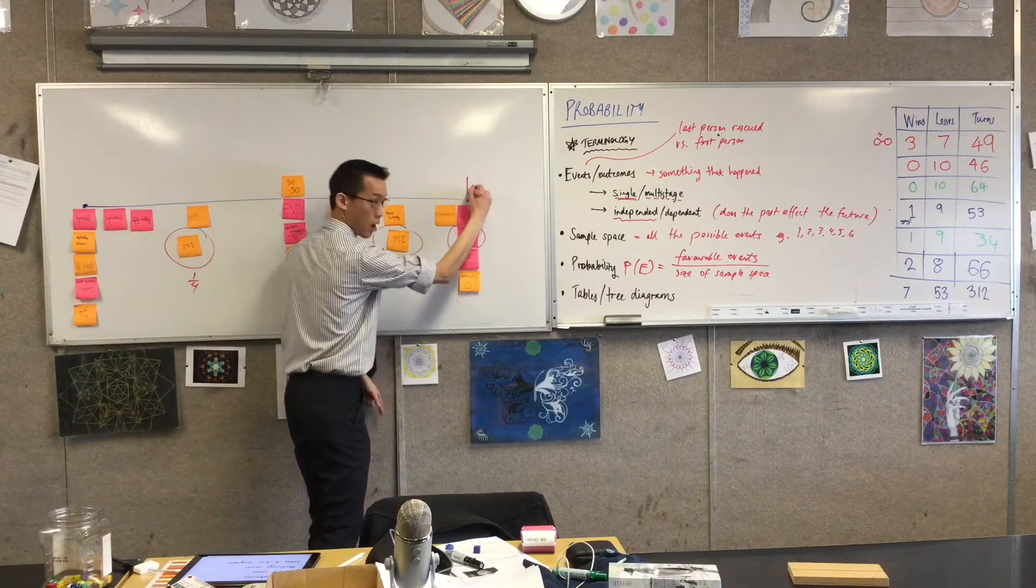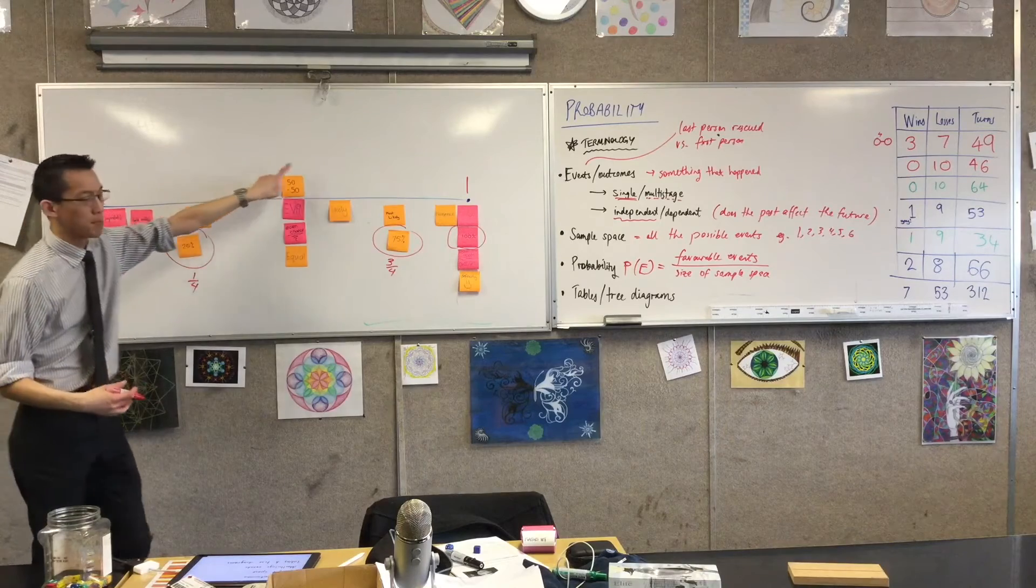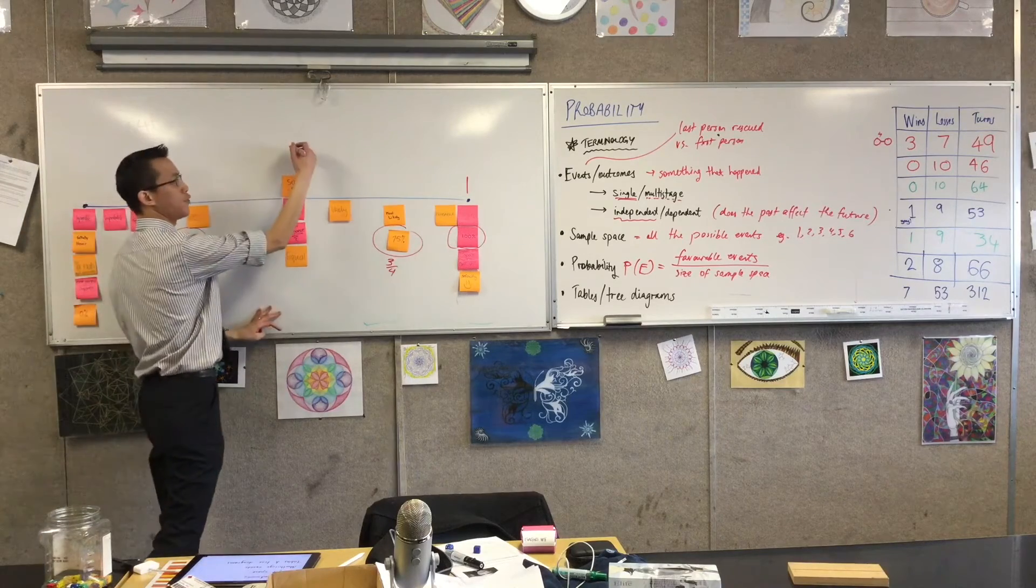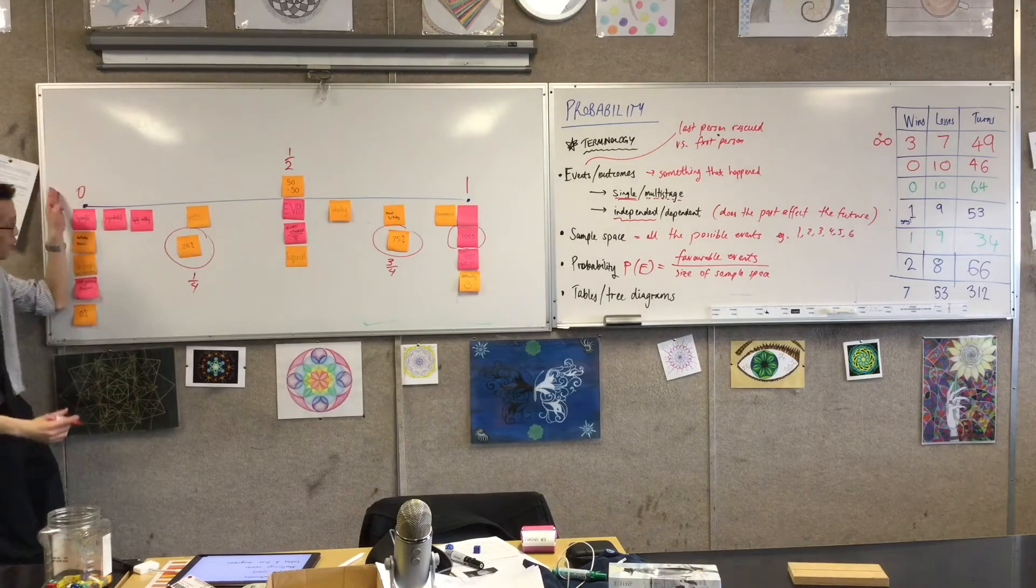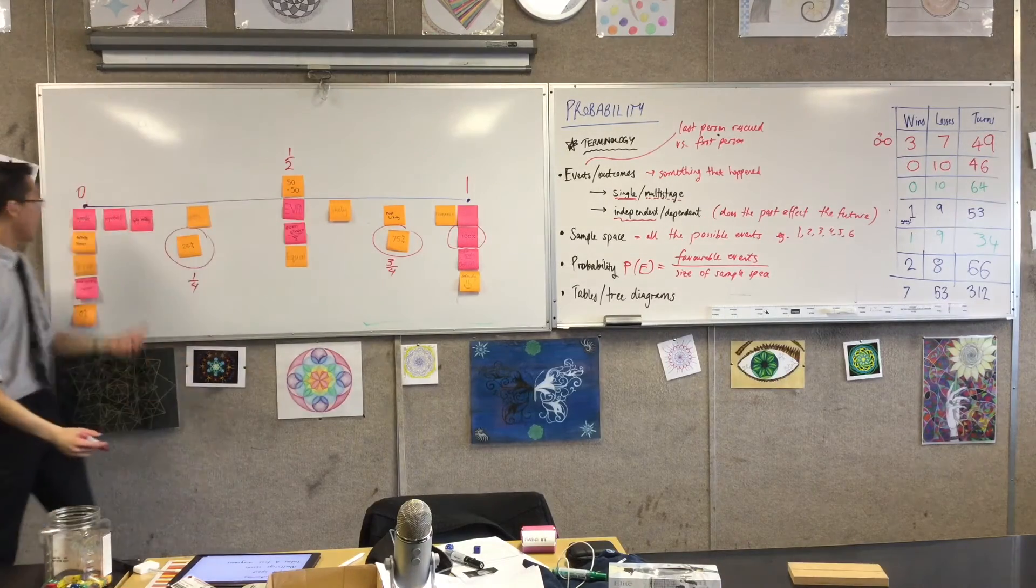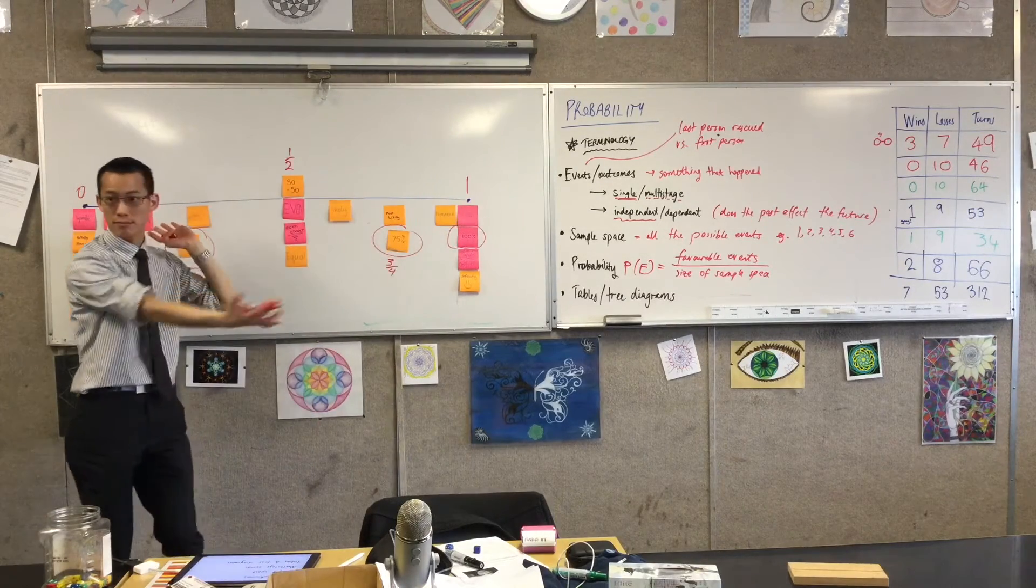A hundred percent - what does percent mean again? Out of a hundred, so a hundred out of a hundred is just one. Then you've got things like 50-50 - well that's 50 percent, so 50 out of 100, which is one-half. You've got this spectrum from zero all the way to one, which means impossible or certain, and all the numbers in between.